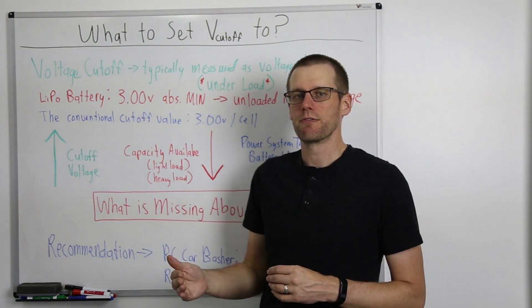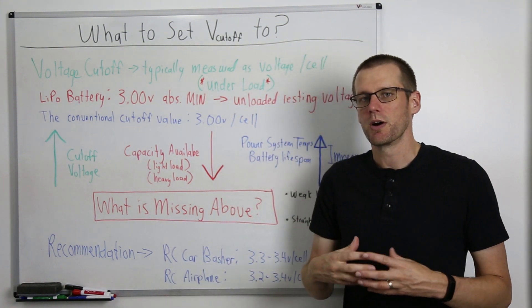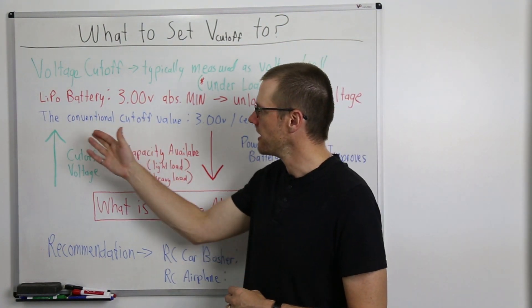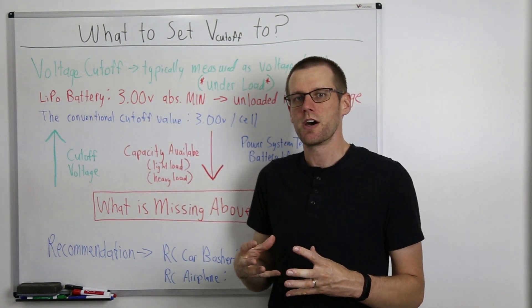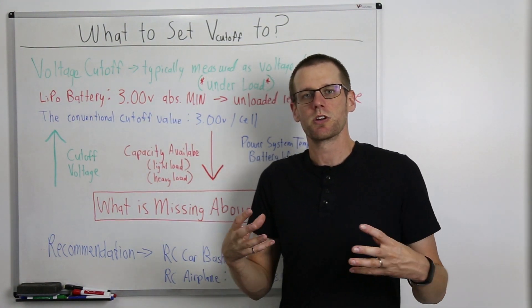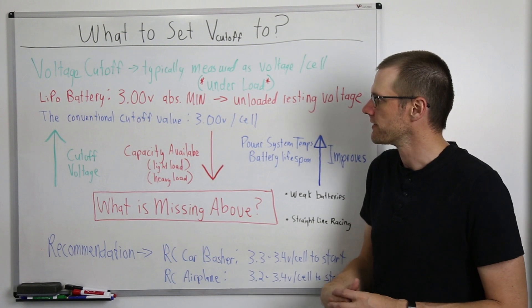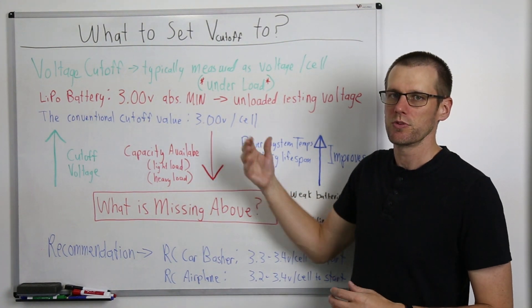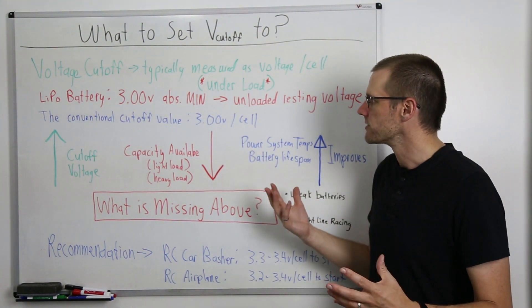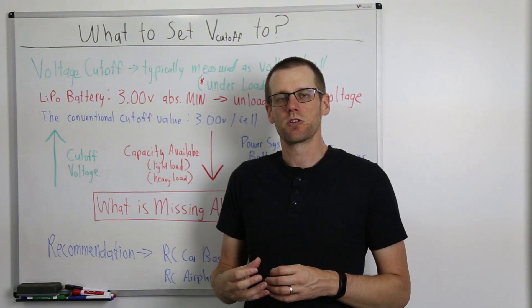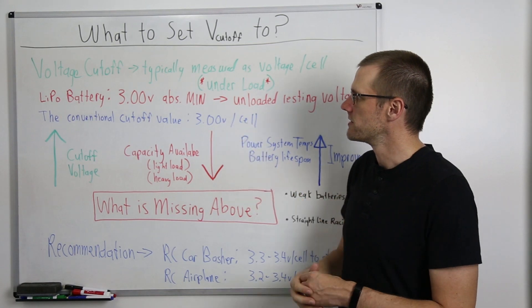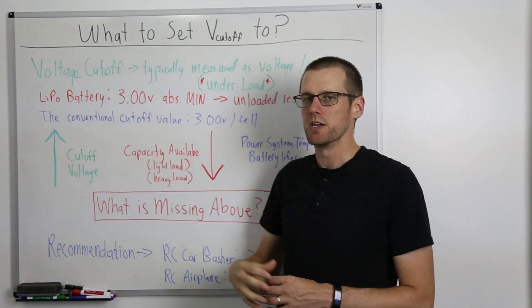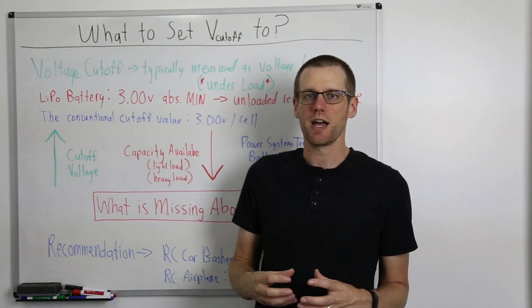And that is also significant to us as we will talk about our next point here. We'll kind of connect the dots between them. So the conventional cutoff value, this is the cutoff value that's been used historically for many, many years as default on speed controls, has been 3.00 volts per cell. And most speed control companies within the early days have adopted this and used it since our lipo battery minimum is 3.00 volts per cell.